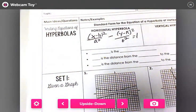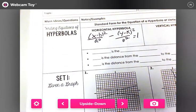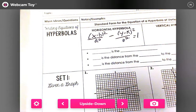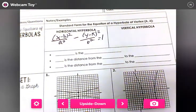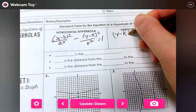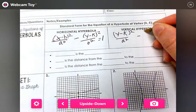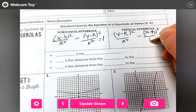Everybody should be writing this down. You should not be watching your phone. Your phone should be away. Please pay attention to what's going on right now. Vertical hyperbola: (y-k)² over a² minus (x-h)² over b² equals 1.